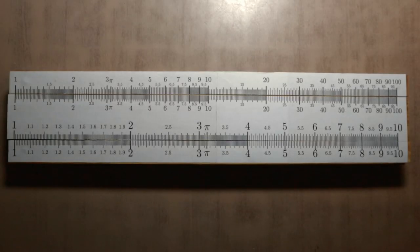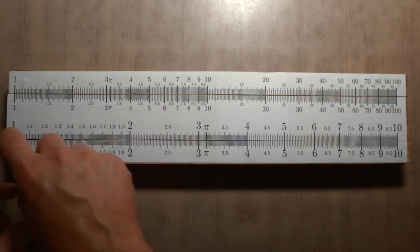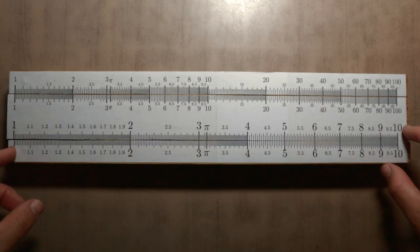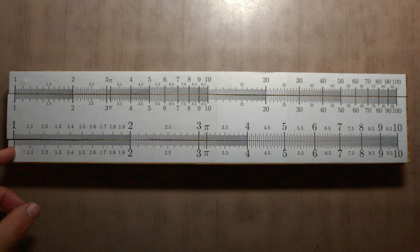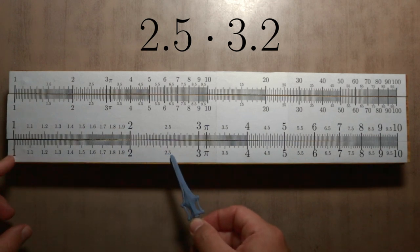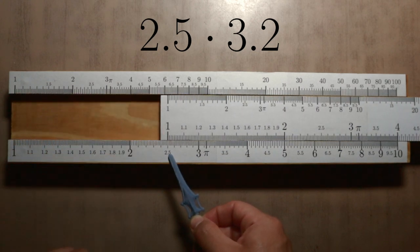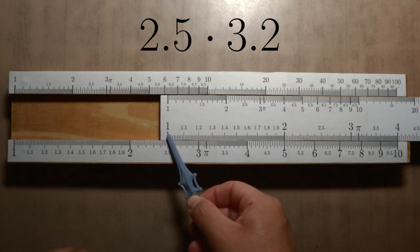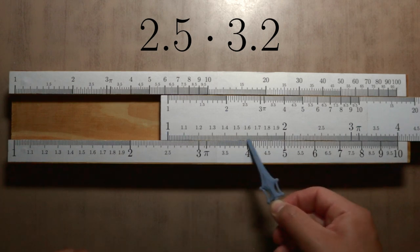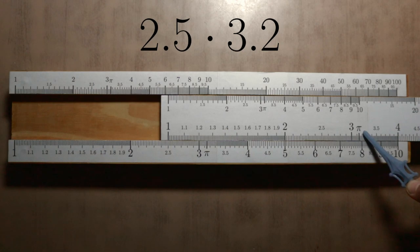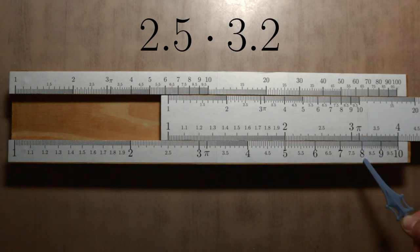Let's do multiplication with the scale below, the one that goes from 1 to 10. For example, 2.5 times 3.2. We look for 2.5 at the bottom and we match it with the 1 on the moving scale. We move on until 3.2. Immediately below, in the original fixed scale, we have the result: 8.